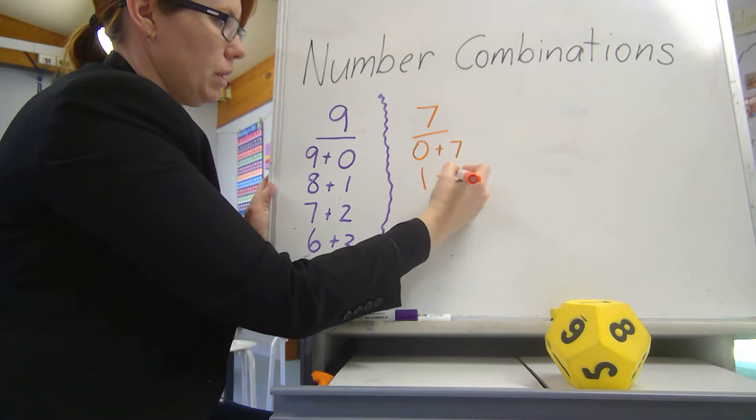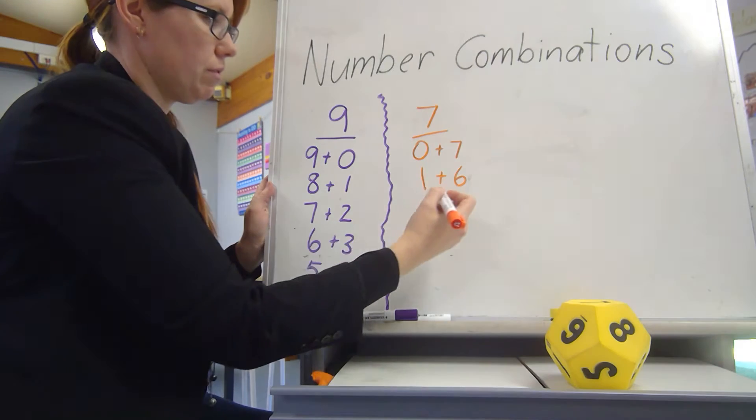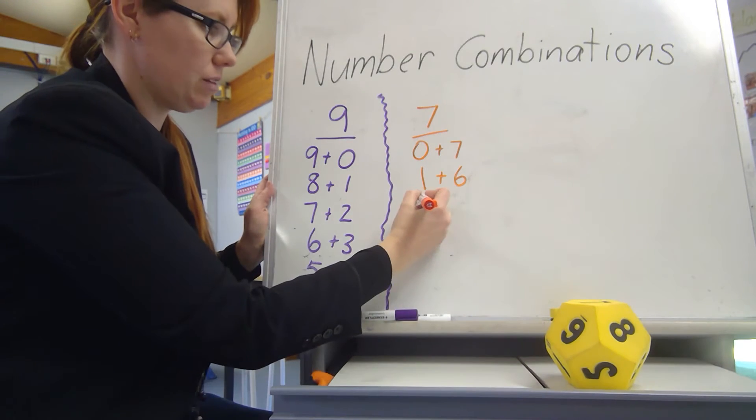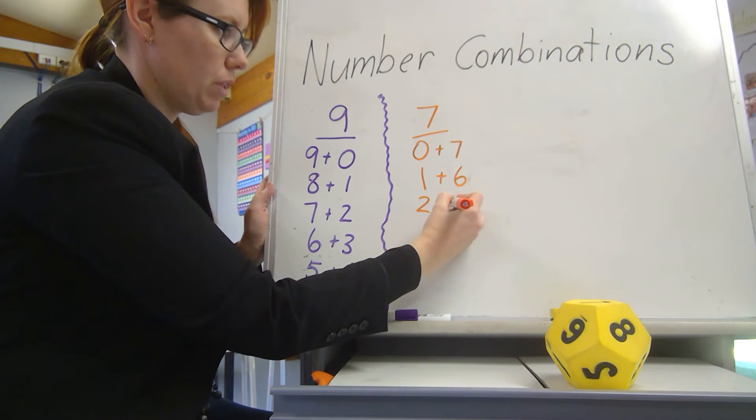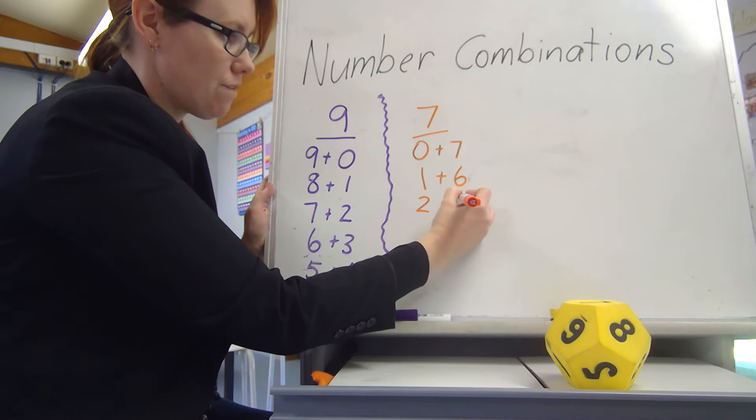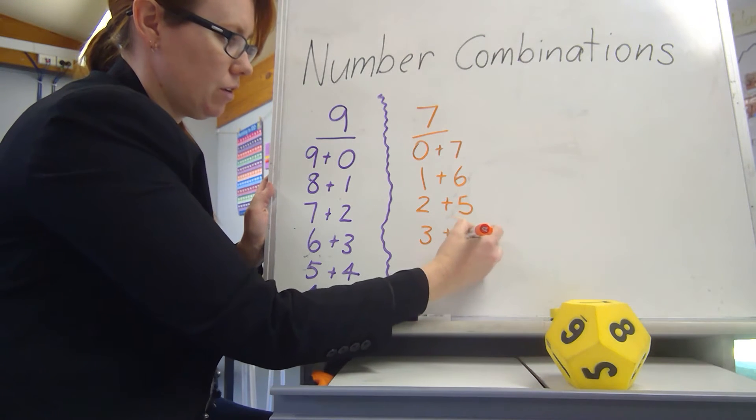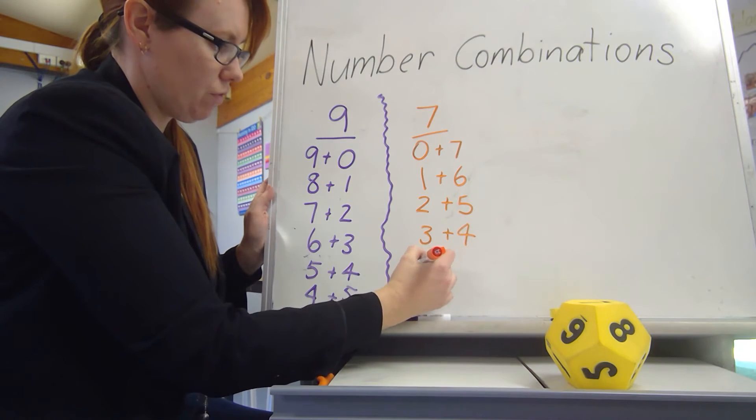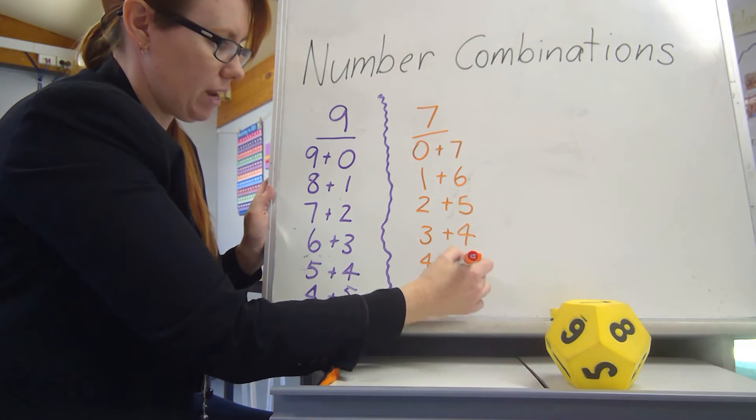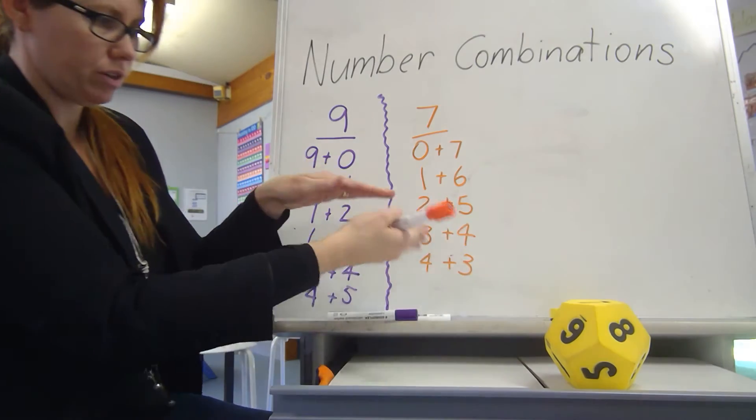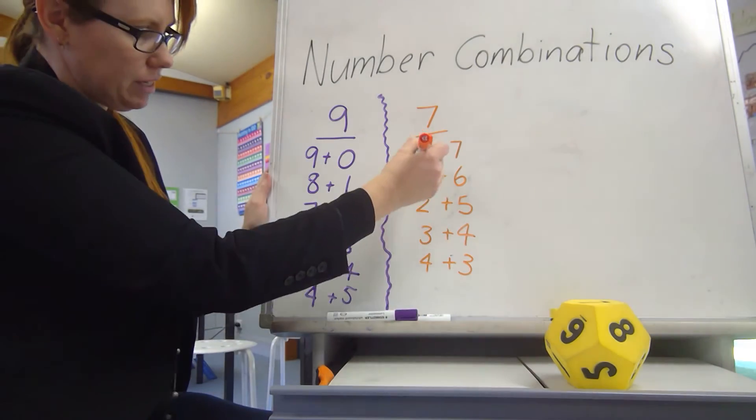1 plus 6 equals 7. What do you think is going to come next? 2 plus 5. 3 plus 4 equals 7. 4 plus 3. And look at that. Now I've found the point where it's going to become a mirror in my pattern.